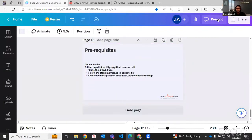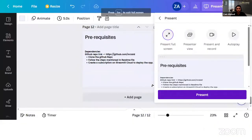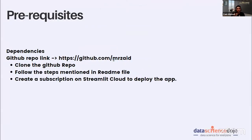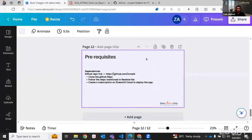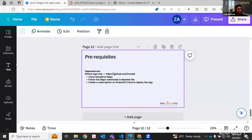Now let's jump to the demo. I'll be sharing the GitHub repo link where the complete code for this webinar is provided. You just clone the repo and follow the steps in the README file. You also need a Streamlit Cloud subscription, which is free, so you can deploy your app on the cloud.